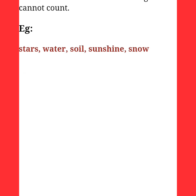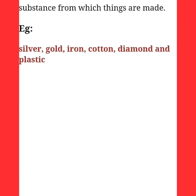Uncountable nouns are things that we cannot count — like water, soil, wheat, rice, and oil. Material nouns refer to a material or substance from which things are made — such as silver, gold, iron, cotton, diamond, and plastic.